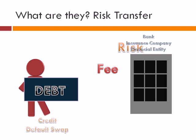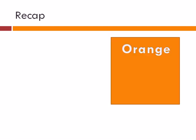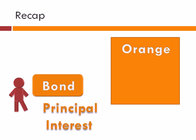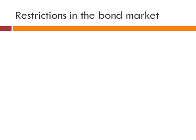Let's say there's a company called Orange and it wants to raise money, so it issues debt to a person in the form of a bond. Over time, that person is going to expect two things: principal and interest. Principal is the original amount of money paid for the bond, and interest is the fee for lending the money to company Orange in the first place.